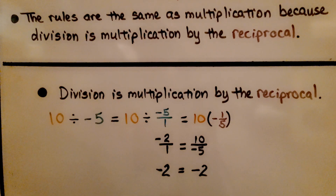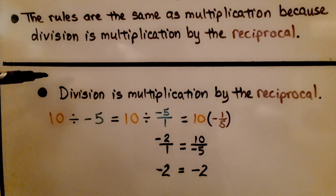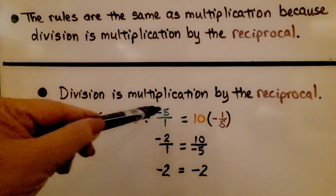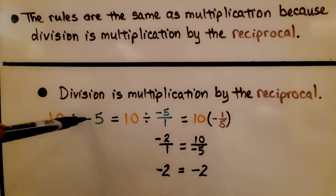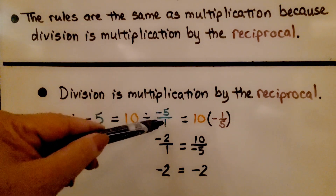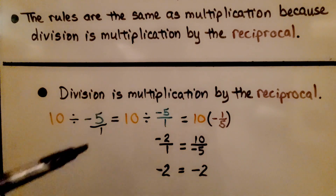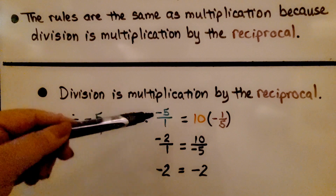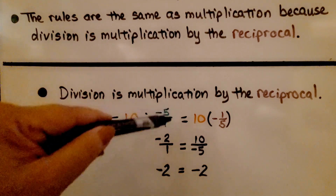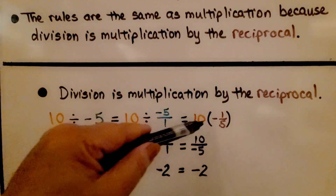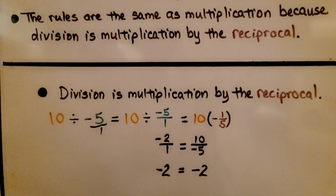Division is multiplication by the reciprocal — a flipped upside-down version of the fraction. The negative 5 can be written over a 1, and we have 10 divided by negative 5 over 1. If we flip this around to a negative 1 fifth, we can multiply it and get negative 2. So division is multiplication by the reciprocal.